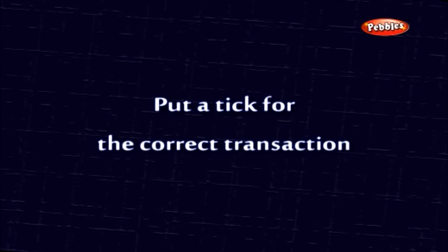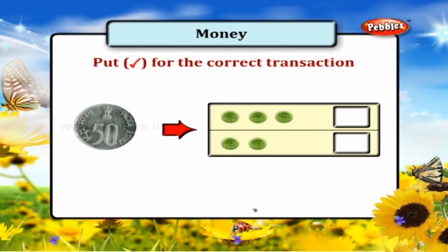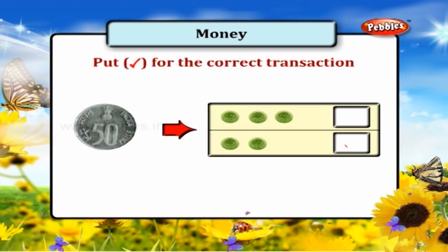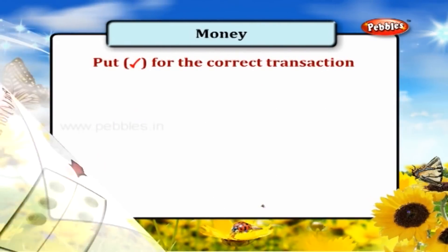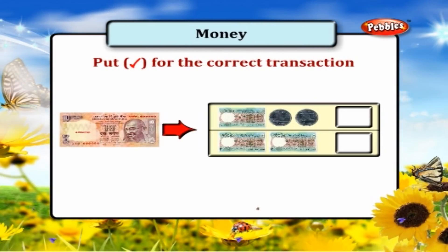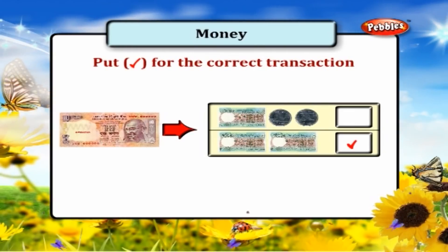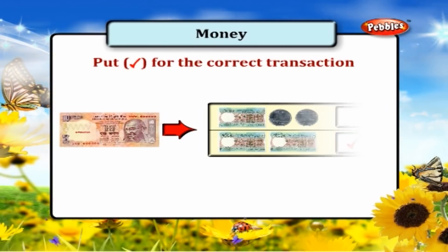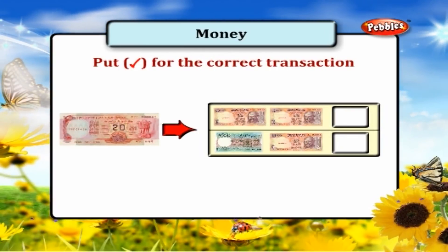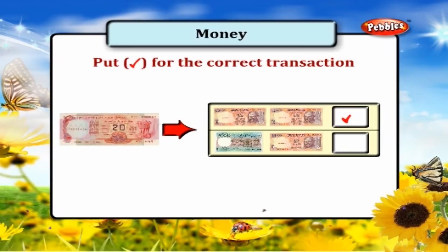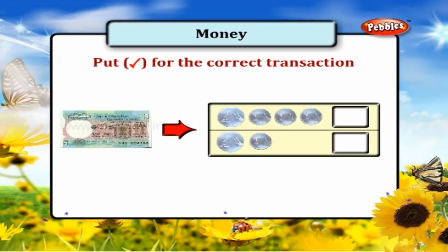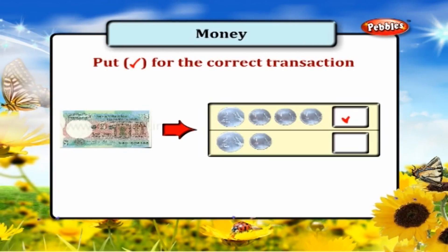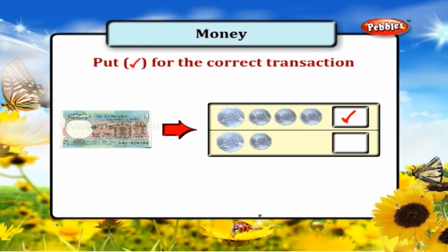Put a tick for the correct transaction. A 50 paisa coin is equal to 2 twenty-five paisa coins. A 10 rupee note is equal to 2 five-rupee notes. 20 rupees is equal to 2 ten-rupee notes. And 5 rupees is equal to 1 two-rupee coin and 3 one-rupee coins.